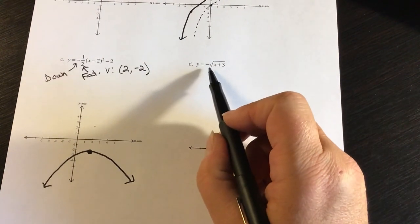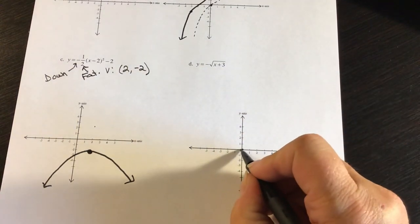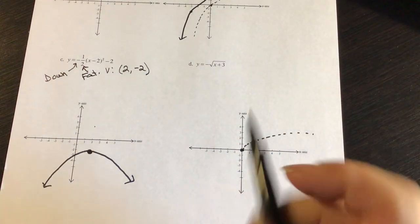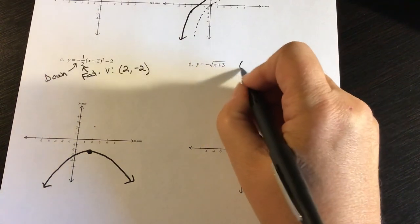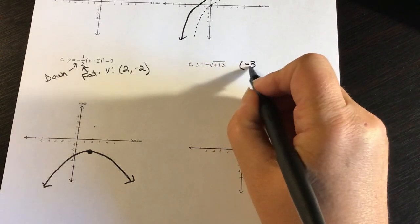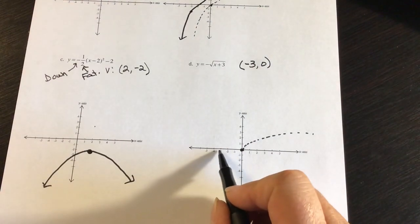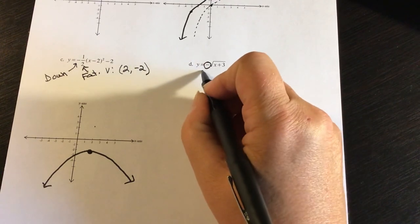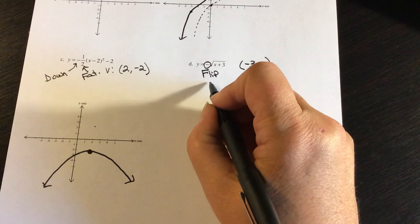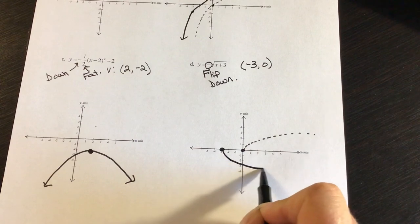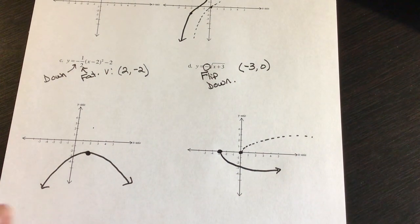The last graph is a square root function. The parent function starts at (0, 0) and goes up slowly. The new starting point is at (–3, 0) — there's no k value, so no vertical shift. Because of the negative, I flip it downward, so it goes downward from that new starting point.